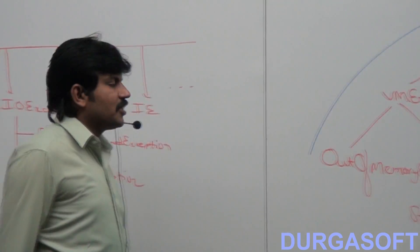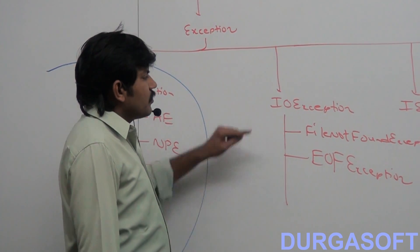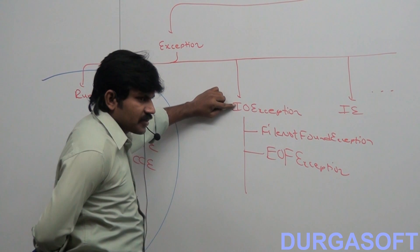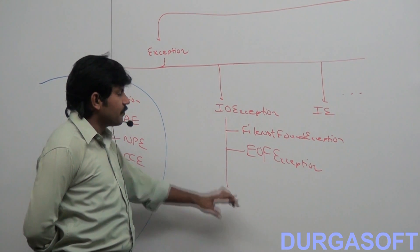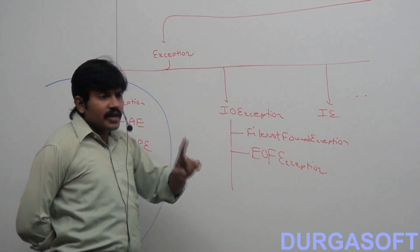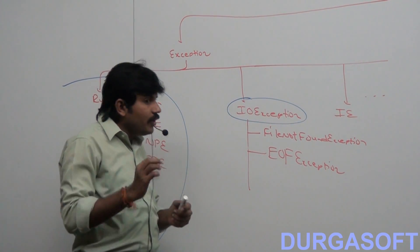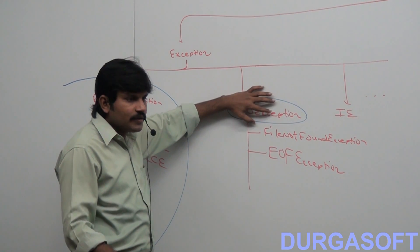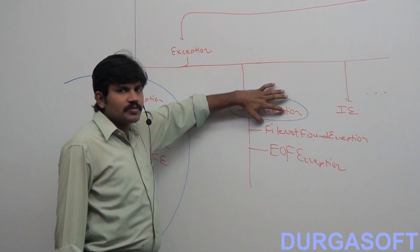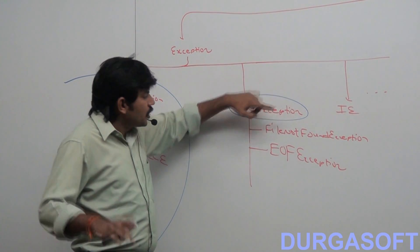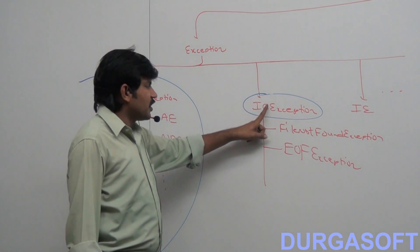Now let's apply this terminology to our checked exceptions. Assume IOException — is it checked or unchecked? It's a checked exception. FileNotFoundException — checked exception. EOFException — checked exception. So a checked exception is said to be fully checked if and only if all its child classes are also checked. Such a type of checked exception is called a fully checked exception.